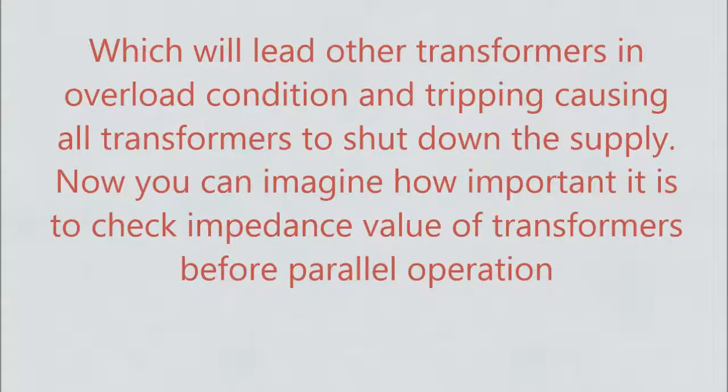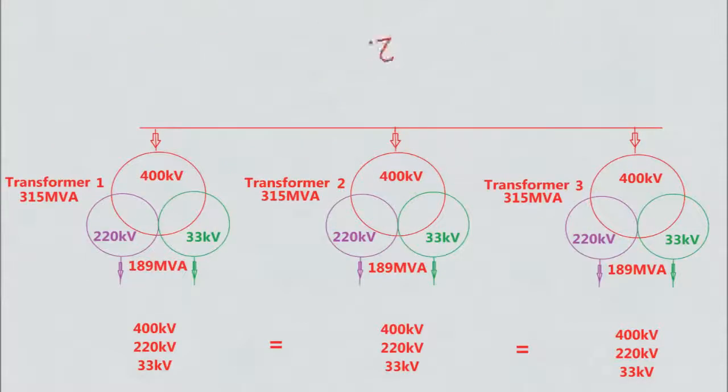This will put other transformers in overload condition and tripping, causing all transformers to shut down the supply. Now you can imagine how important it is to check impedance values of transformers before parallel operation. The second condition is that voltage ratings of the transformers should be the same. For example, a 220 kV transformer can be paralleled with another 220 kV transformer only, and not with one of a different rating.